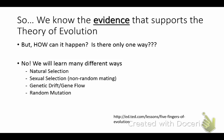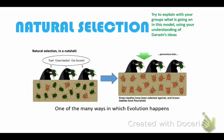Today we're going to look at how evolution occurs. There are four things you need to know for the test: natural selection, sexual selection, non-random mating, genetic drift and gene flow, and random mutations. Today we're going to talk about natural selection.